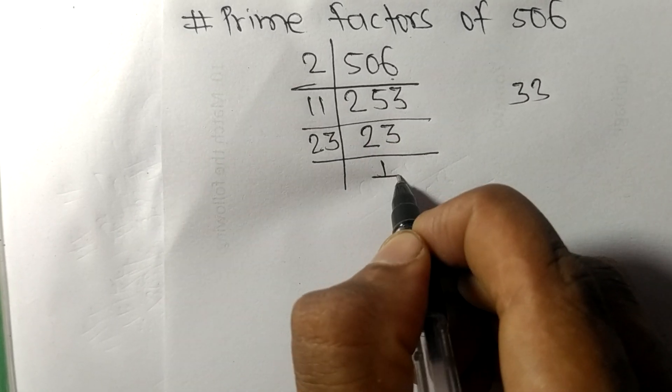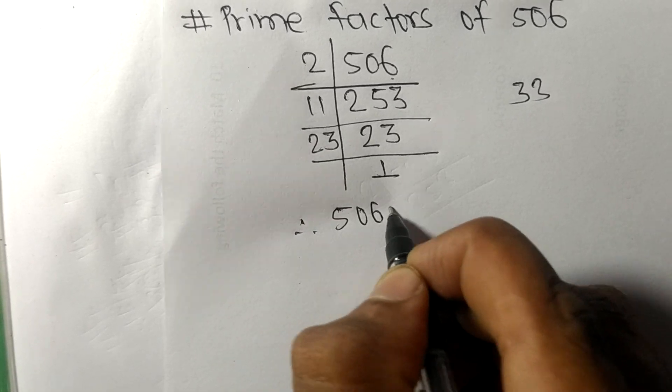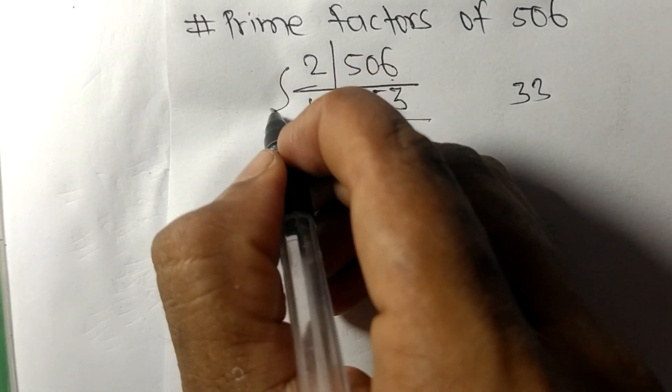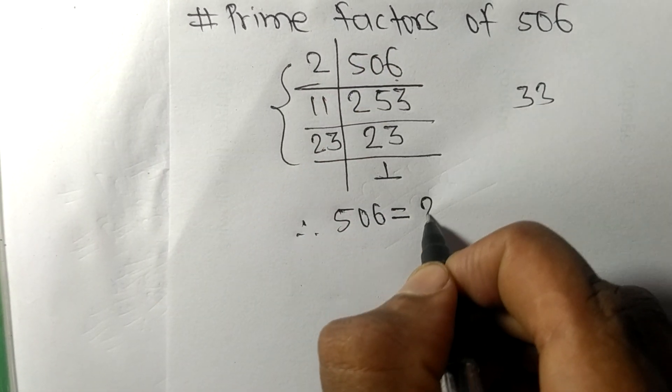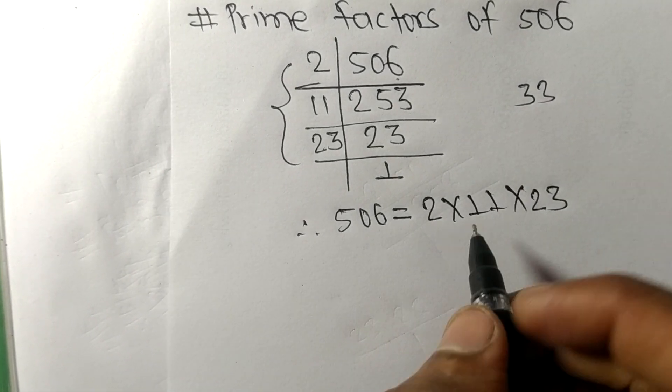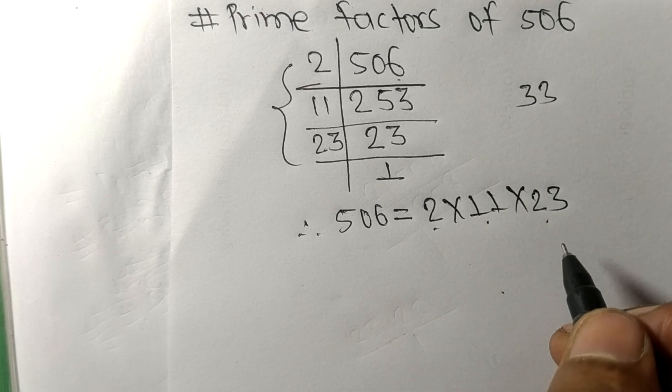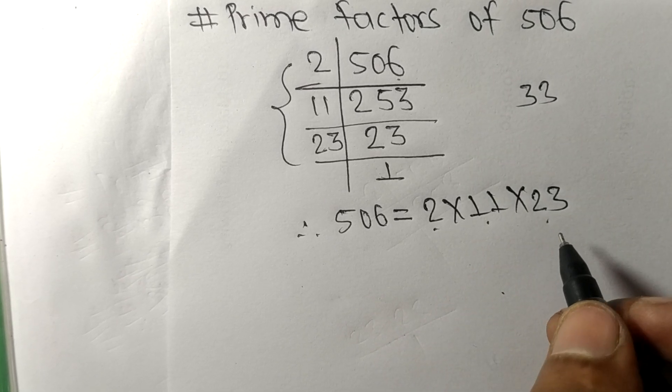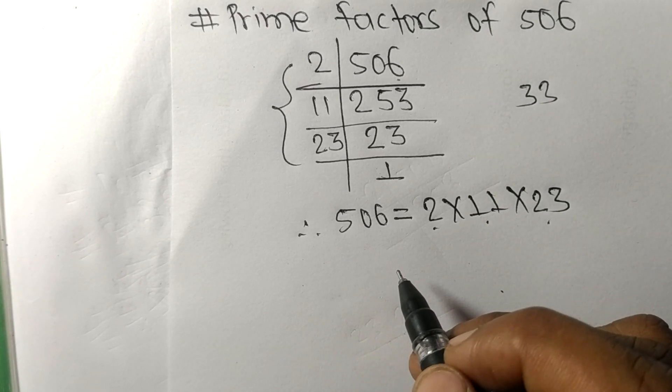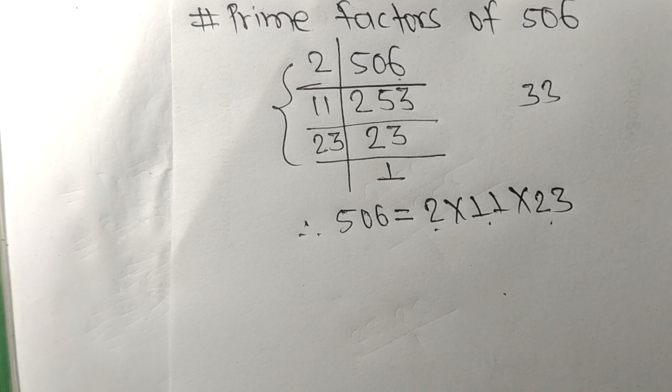Therefore, 506 is equal to, from this side we have, 2 times 11 times 23. So 2, 11, and 23 are the prime factors of 506. So this much for today and thanks for watching.